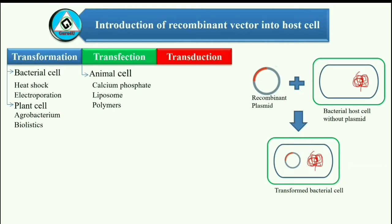Liposomes and polymers can be used as vectors to deliver DNA into cultured animal cells. Positively charged liposomes bind with DNA, while polymers can be designed to interact with DNA. They form lipoplexes and polyplexes respectively, which are then uptaken by the cells. Other techniques include using electroporation and biolistics. To create transgenic animals, the DNA must be inserted into viable embryos or eggs. This is usually accomplished using microinjection, where DNA is injected through the cell's nuclear envelope directly into the nucleus.